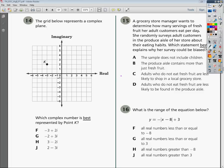Alright, this is the Algebra 2 EOC problem number 15. It says a grocery store manager wants to determine how many servings of fresh fruit her adult customers eat per day. She randomly surveys adult customers in the produce aisle of her store about their eating habits. Which statement best explains why her survey could be biased?